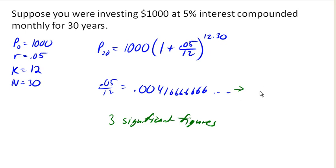it would be okay to round it to .00417, rounding up because this is five or bigger. What we would not want to round it to, for example, .004, which is very different. To sort of see why,